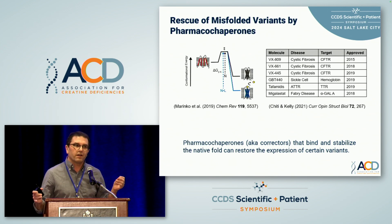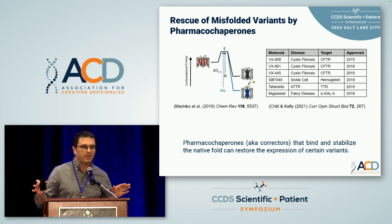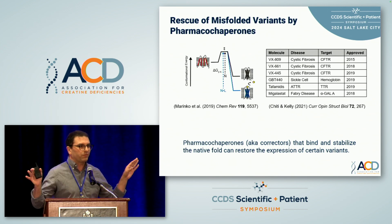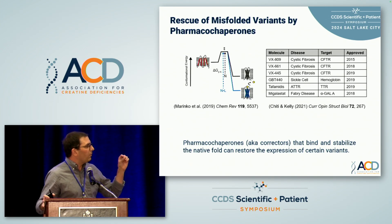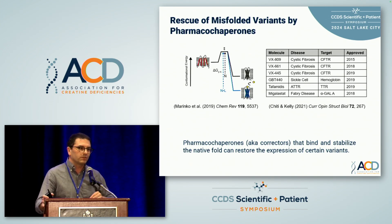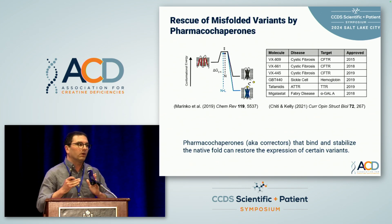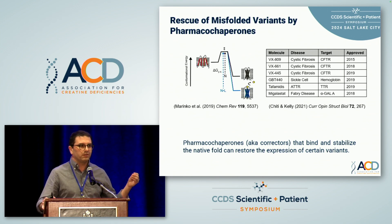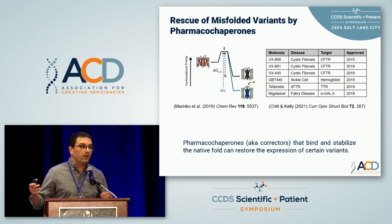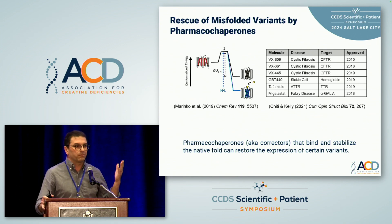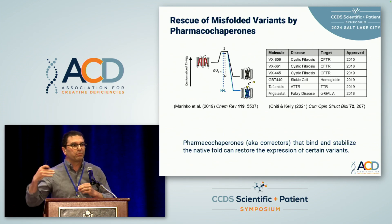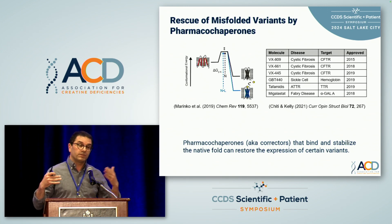There's a specific variant called Delta F508 — it sounds similar to Delta F408 in CTD, but it's a totally different protein. That's the one that if you could just get it to traffic, it could function. We also have allosteric modulators for CFTR called potentiators that can actually open the channel a little bit more. So what we need are drugs that both chaperone the protein to get to the cell surface, and maybe also allosteric modulators for the creatine transporter for those variants that have broken function but still traffic okay.